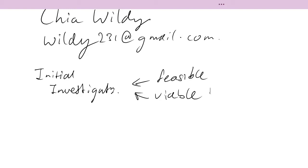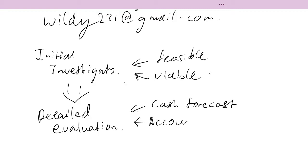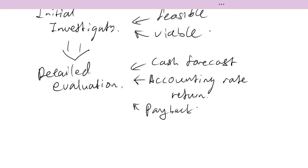After the initial investigation, if you find it is viable and feasible, the next step is a detailed evaluation. In the detailed evaluation, the businessmen, accountants, and stakeholders look into the exact details like the cash forecast, the exact financial estimates and figures. Methods like the accounting rate of return are used to assess the project and see whether in terms of profitability it's worth embarking on. Another method used in this detailed evaluation is the payback period.